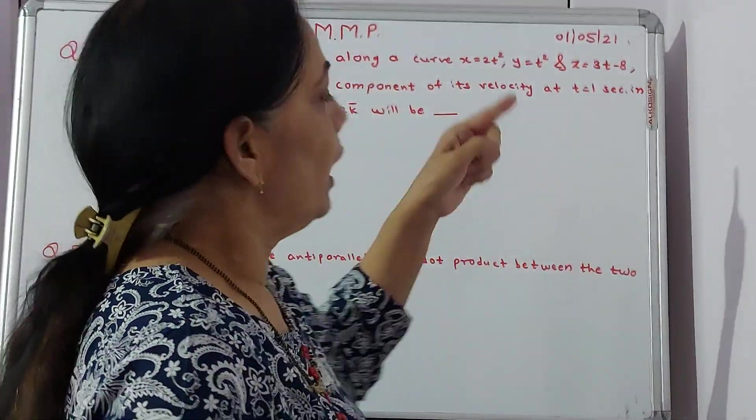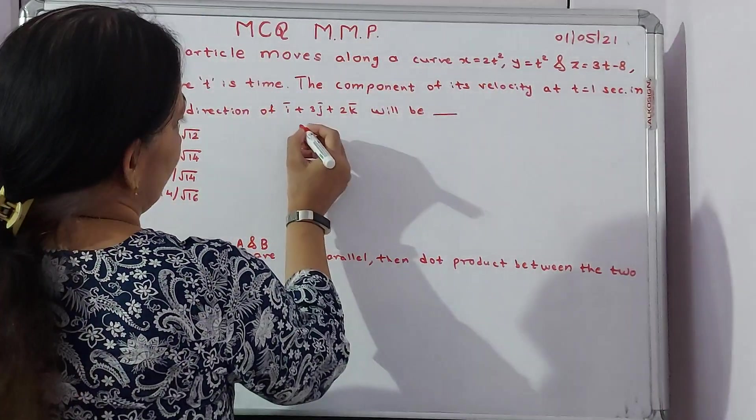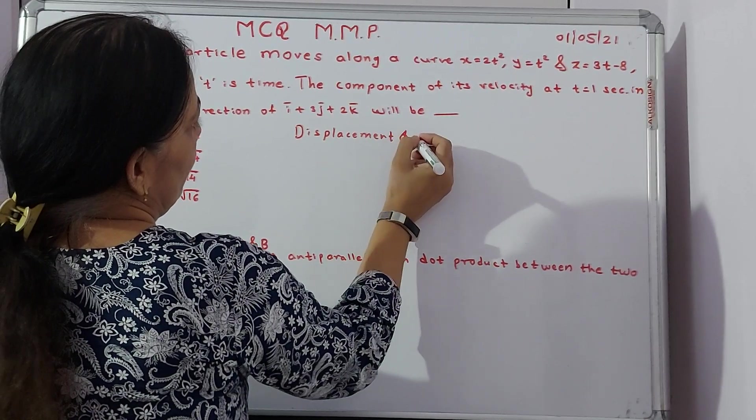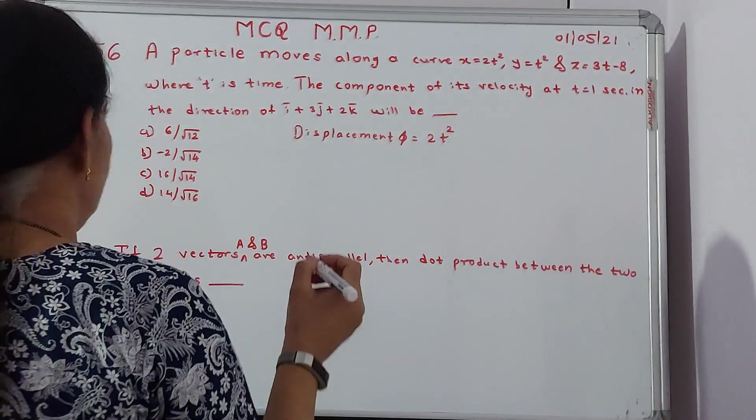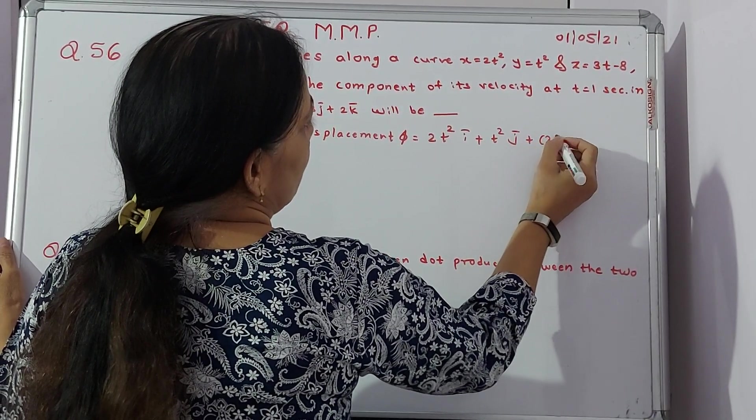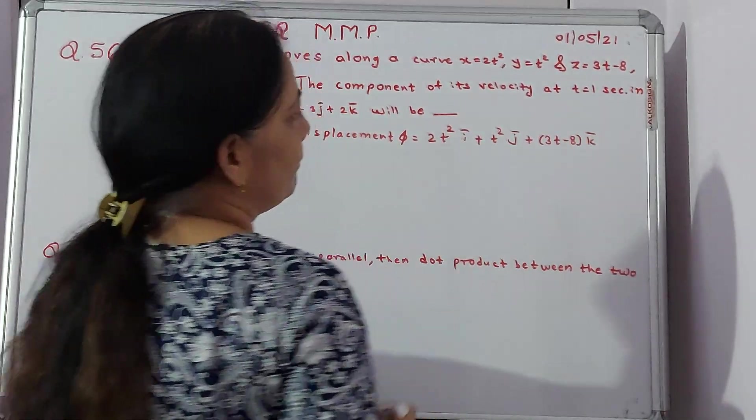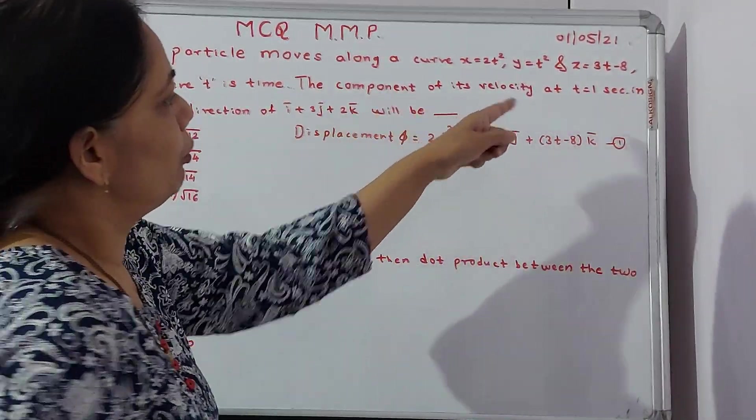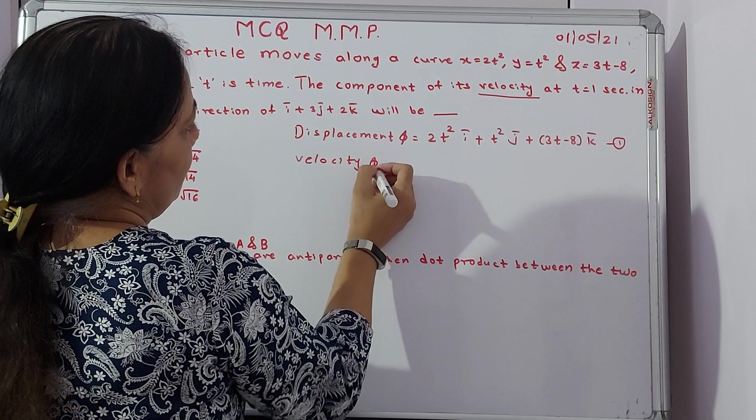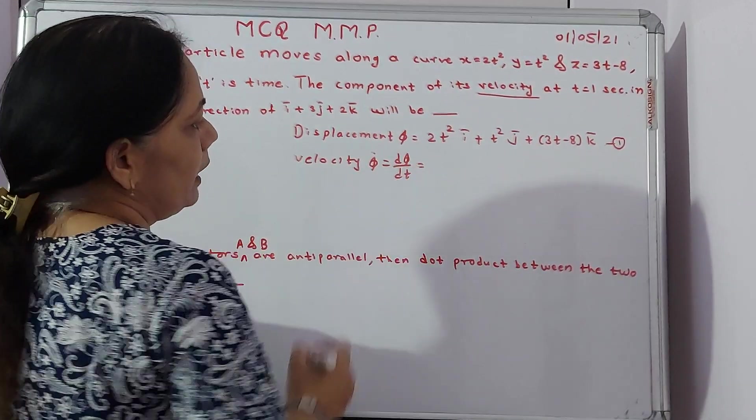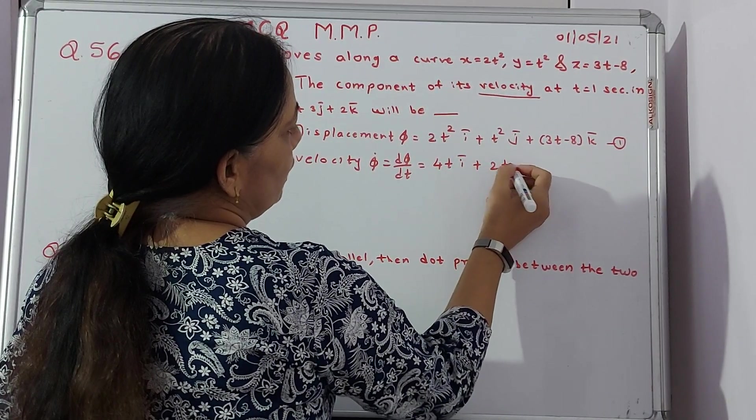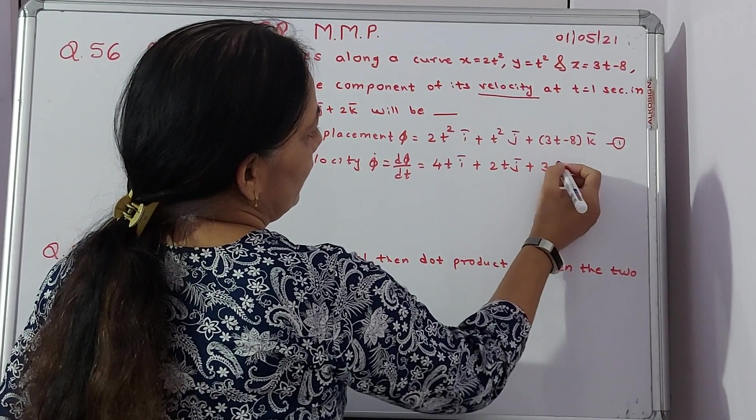When you say that the particle is moving along a curve, we can say displacement phi is equal to 2t square i plus t square j plus 3t minus 5k. This is my equation number 1. I want to find out component of its velocity, so velocity will be phi dot which is d phi by dt. The derivative of this gives 4ti plus 2tj plus 3k, equation number 2.